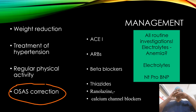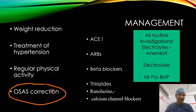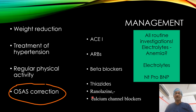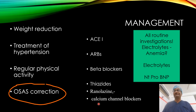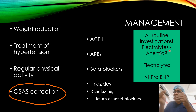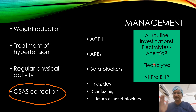This is how we diagnose and grade diastolic dysfunction. Management includes non-pharmacological methods: weight reduction, treatment of hypertension, regular physical activity, and OSAS correction. Pharmacologically: ACE inhibitors, ARBs, beta blockers, thiazides, ranolazine, and calcium channel blockers. Calcium channel blockers have a minimal role in systolic heart failure but some value in heart failure with preserved EF. Routine investigations include electrolytes, anemia workup, and BNP for myocardial stress.